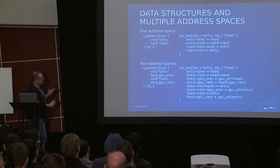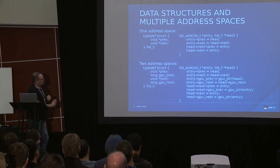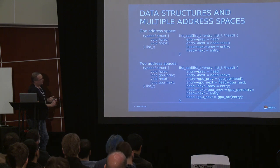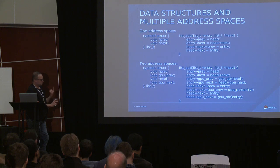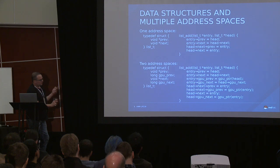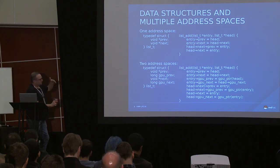When you have two address spaces, the function becomes much more complex — and this is only with one device, one GPU. We're seeing computers with 32 GPUs. Technically you can get away with using only one address space for all 32 GPUs, but in some cases you will have 32 different address spaces. That means you will need to repeat the extra pointer logic 32 times. Obviously it's making people crazy.